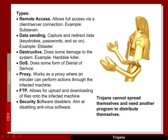A Trojan itself cannot spread and needs another program to distribute itself. One typical type of Trojan allows a remote desktop or remote connection into the host. An example of this is Sub7, which typically involves opening up a port on the host and establishing a connection — either a remote desktop or a simple client-server connection.